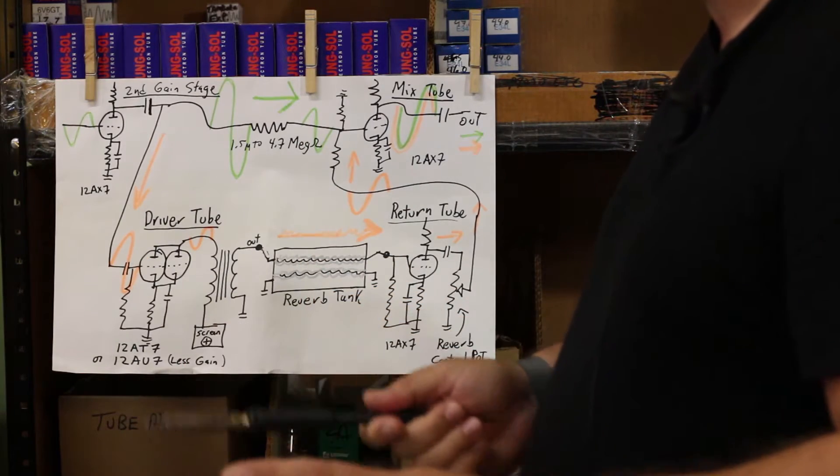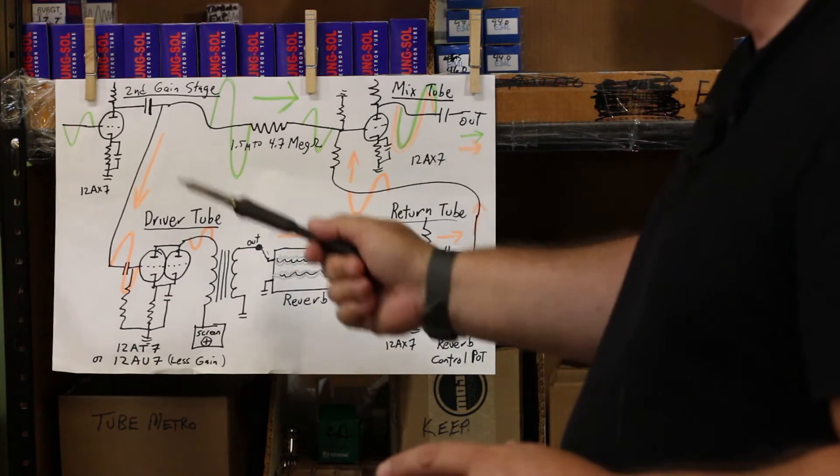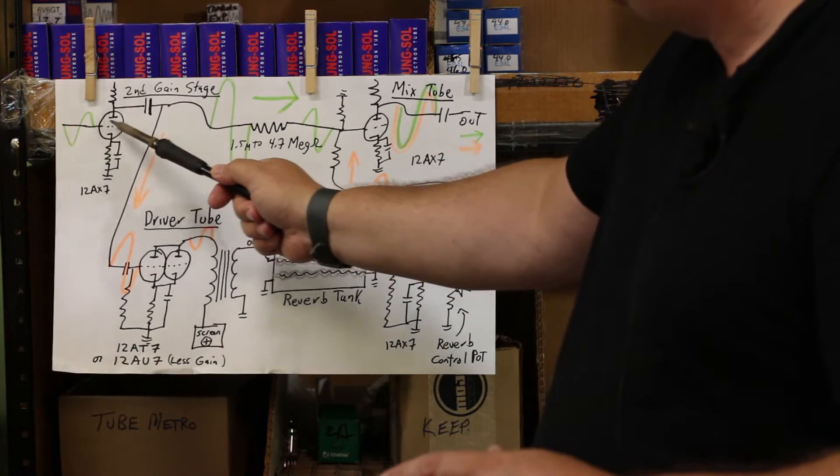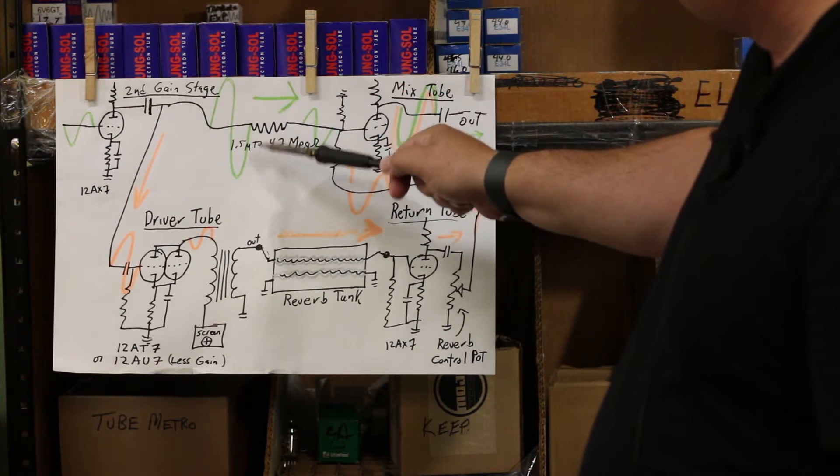We've talked about how a tube works in other videos. We're just going for the general flow. So you've got your guitar signal coming into the tube, this tube. It's amplified to a much bigger signal.